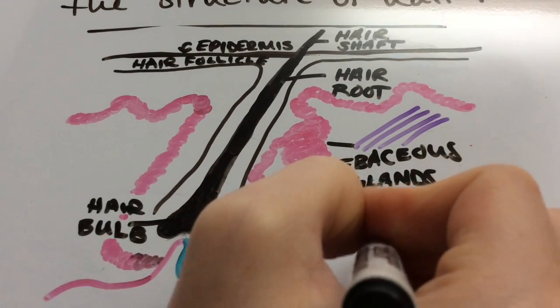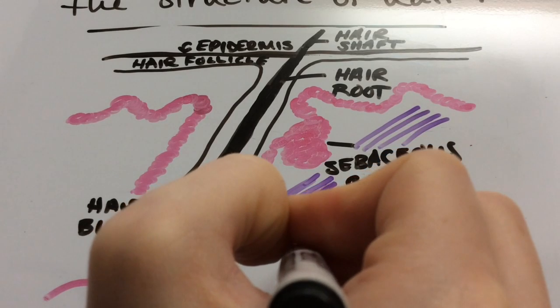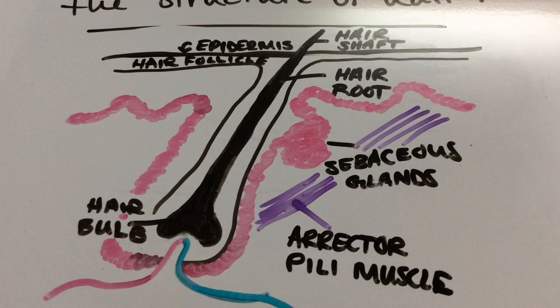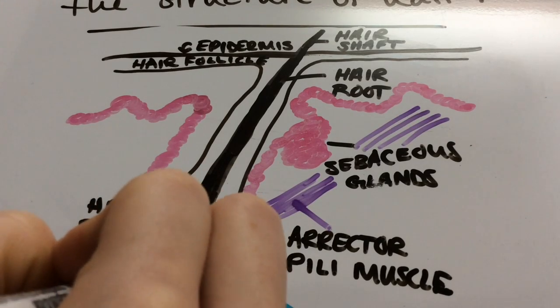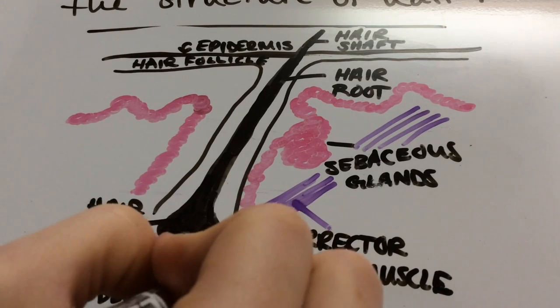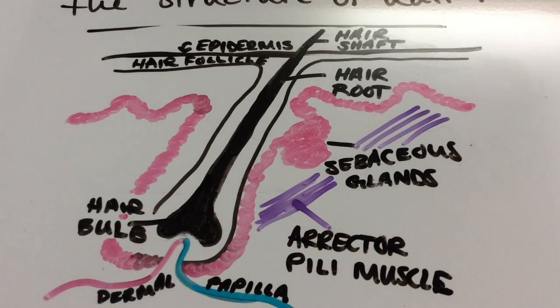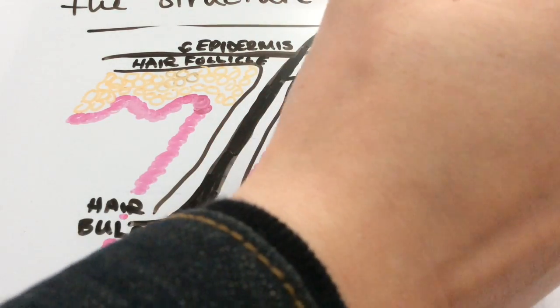What I draw here is the arrector pili muscle - a small, involuntary muscle located at the base of the hair follicle. When it contracts, it causes the hair to stand straight up. We know this as goosebumps. Cold weather or strong emotions can make it contract. All I'm drawing here are some cells to complete the picture. That is the structure of hair.